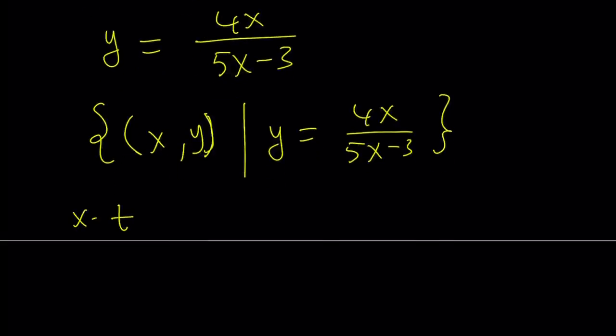Or one can write it using a parameter like t. Suppose x equals t. Then the solutions are going to be ordered pairs t comma 4t over 5t minus 3. And as you can see here, t equals 3 over 5 is not allowed because that's going to make our expression undefined.